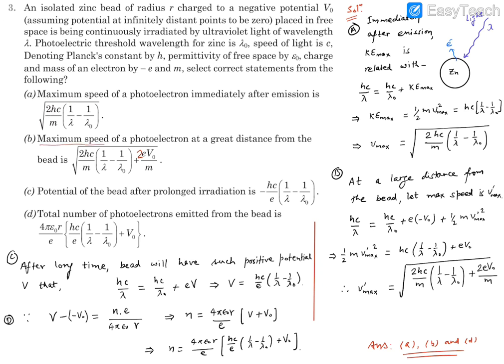Option B says the maximum speed of the photoelectrons at a great distance from the bead. Once the electrons come out and go to a greater distance, how much speed or maximum speed are they going to have? This is the expression in the new book. It has been updated. There is a factor of 2 coming in. So at a large distance, once we go to a large distance, after this emission, the voltage is going to play a role.